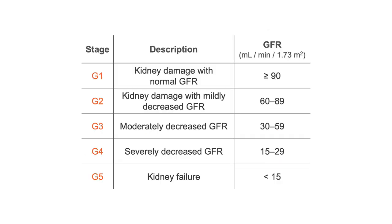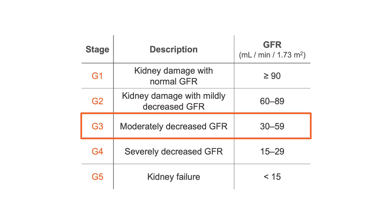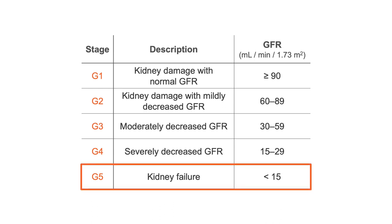The glomerular filtration rate G stages follow the chronic kidney disease classification scheme. G1 is a GFR greater than 90 ml per minute per 1.73 meter squared. G2 is a GFR of 60 to 89 ml per minute per 1.73 meter squared. G3 is a GFR of 30 to 59 ml per minute per 1.73 meter squared. G4 is a GFR of 15 to 29 ml per minute per 1.73 meter squared. G5 is when the GFR is less than 15 ml per minute per 1.73 meter squared or there is treatment by dialysis.